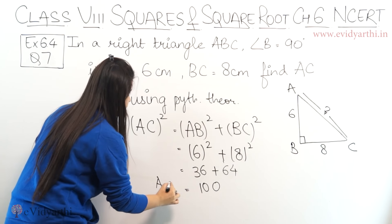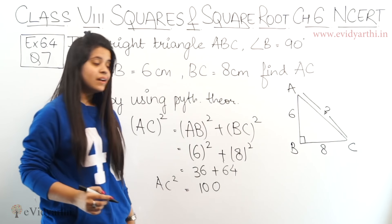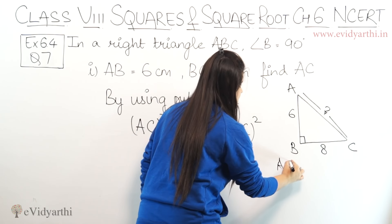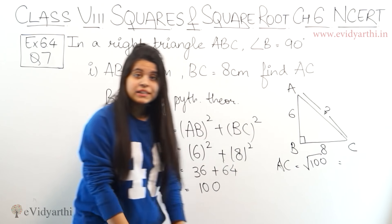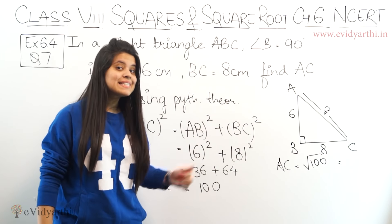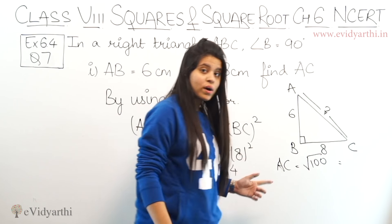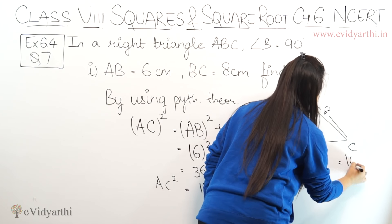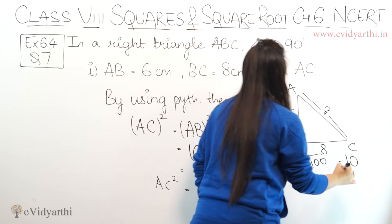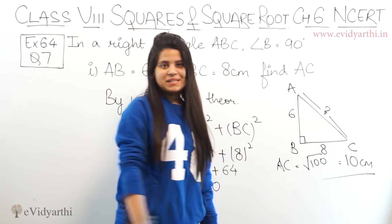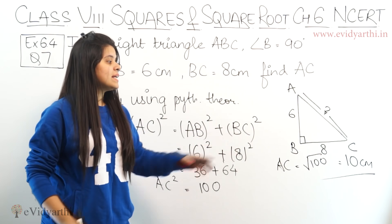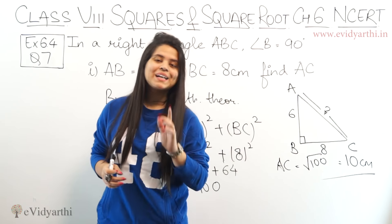Now AC squared equals to 100. This means AC will be equal to square root of 100. We know 10 into 10 is 100, so 10 squared is 100. This means AC equals to 10 centimeters. So the length of AC is 10 centimeters. That was the first part.